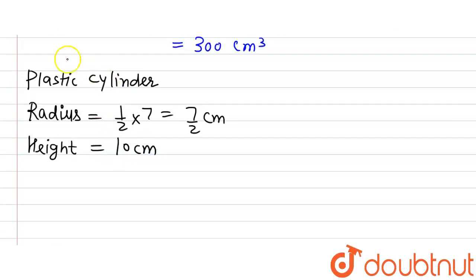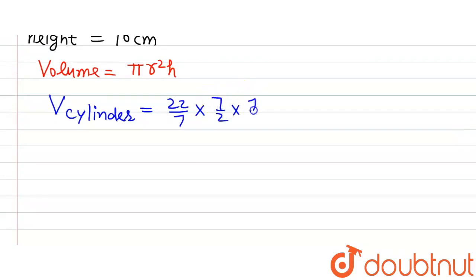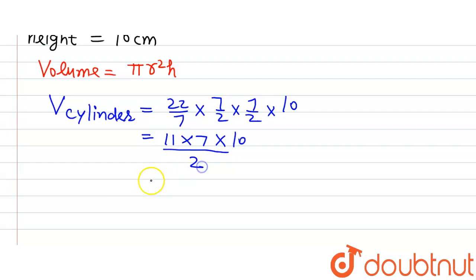The formula for volume of a cylinder is V = πr²h. So V cylinder = (22/7) × (7/2) × (7/2) × 10. Solving: 7 divided by 7 gives 1, and 2 divided into 20 gives 11. We get 11 × 7 × 10 / 2, which is 770/2, giving us 385 cm³.